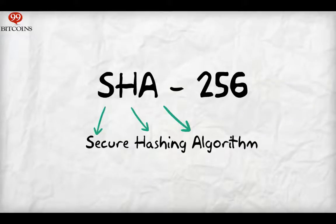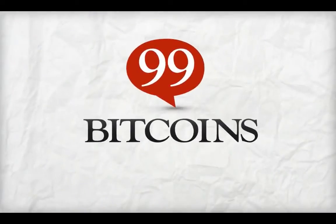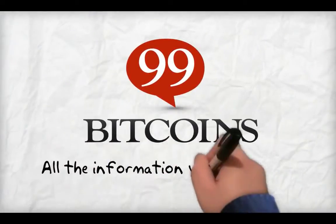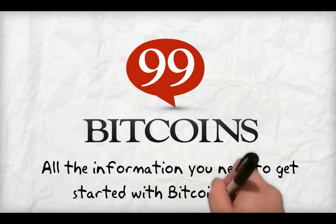Using hashing helps the Bitcoin network stay immune to alteration and fraud, but more about that in a later video. For more information, visit 99Bitcoins.com — all the information you need to get started with Bitcoin today.